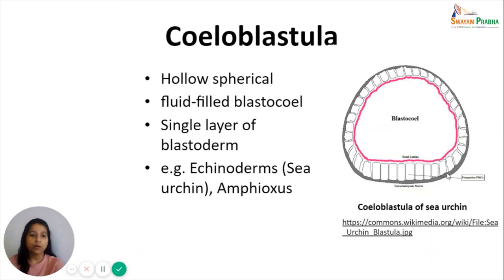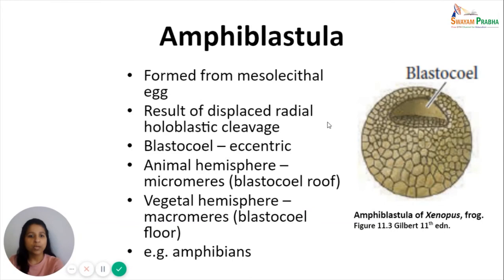The third type of blastula is the amphiblastula, seen in amphibians. Amphiblastula is formed from mesolecithal eggs as a result of displaced radial holoblastic cleavage, in which the blastocele is eccentric in nature. The animal hemisphere consists of smaller micromeres which form the roof of the blastocele, while the vegetal hemisphere consists of large macromeres which form the floor of the blastocele.